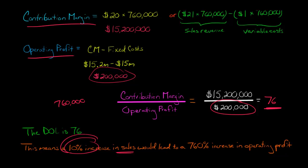So in this case, we'd have 10% times 76 would be 760%. So in other words, if sales were to go up by 10%, then the operating profit would increase by 760%. Now remember, this is not a constant.